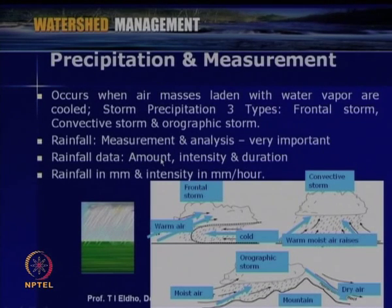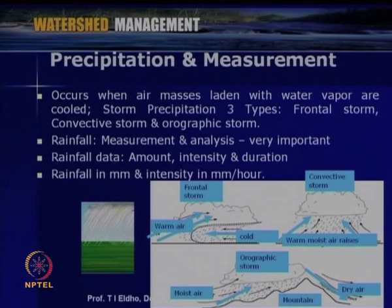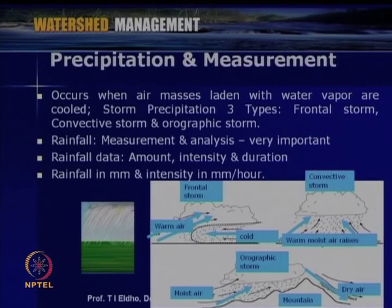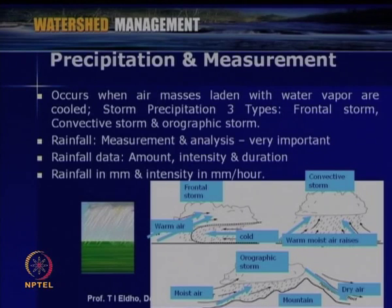For a particular area, we must measure rainfall and analyze its pattern. Important parameters include total rainfall amount, intensity of rainfall, and duration. Rainfall is described in terms of depth of water in millimeters, and intensity in millimeters per hour. These are all very important for water resource assessment for a particular watershed.